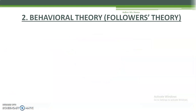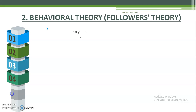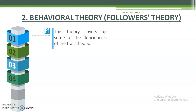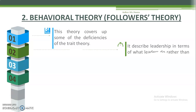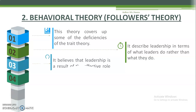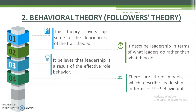The second major theory is behavioral theory, sometimes called followers theory. This theory covers up some of the deficiencies of trait theory. It describes leadership in terms of what leaders do rather than what they are. It believes that leadership is a result of effective role behavior. There are three models which describe leadership in terms of the behavioral aspects of a leader.